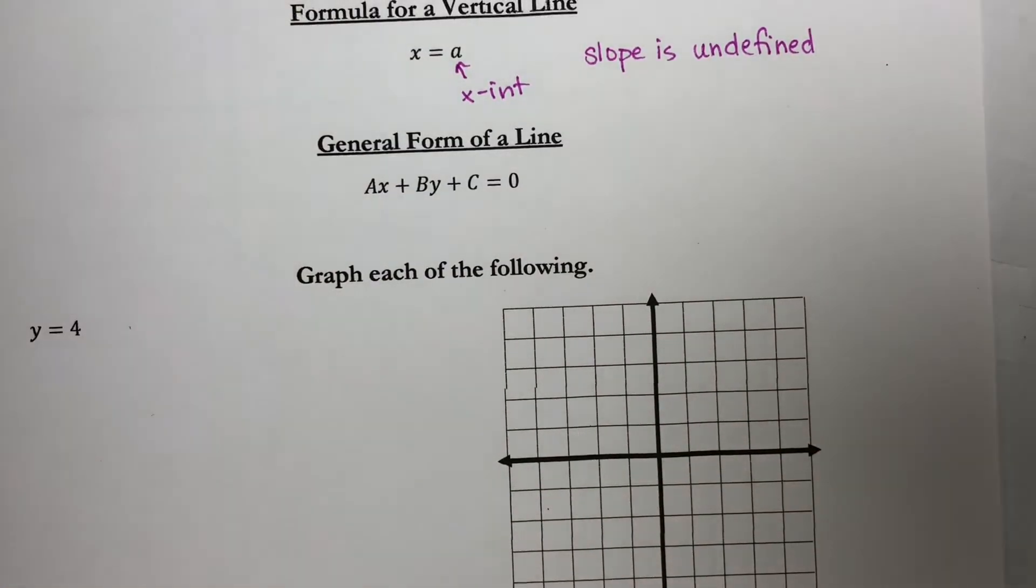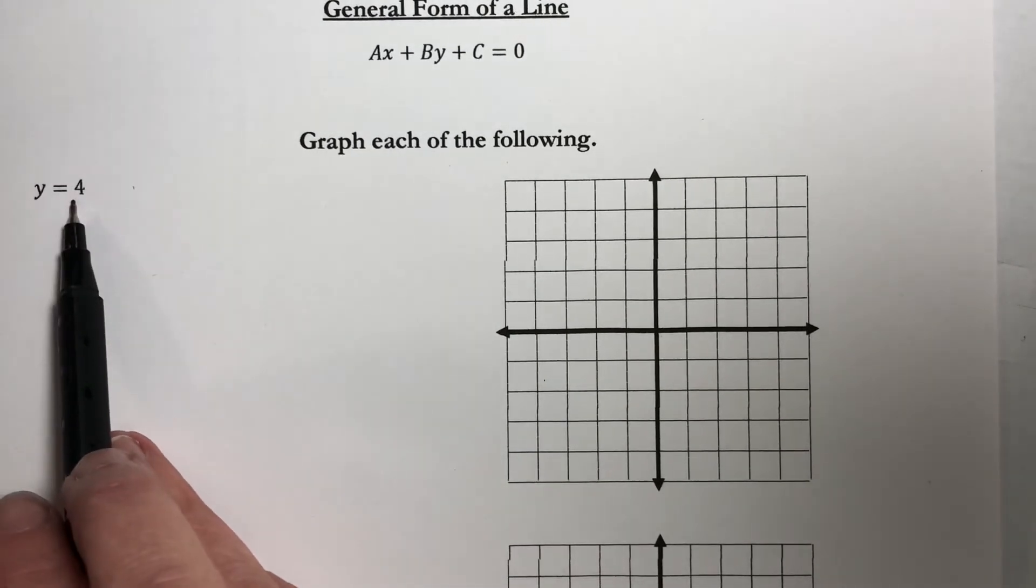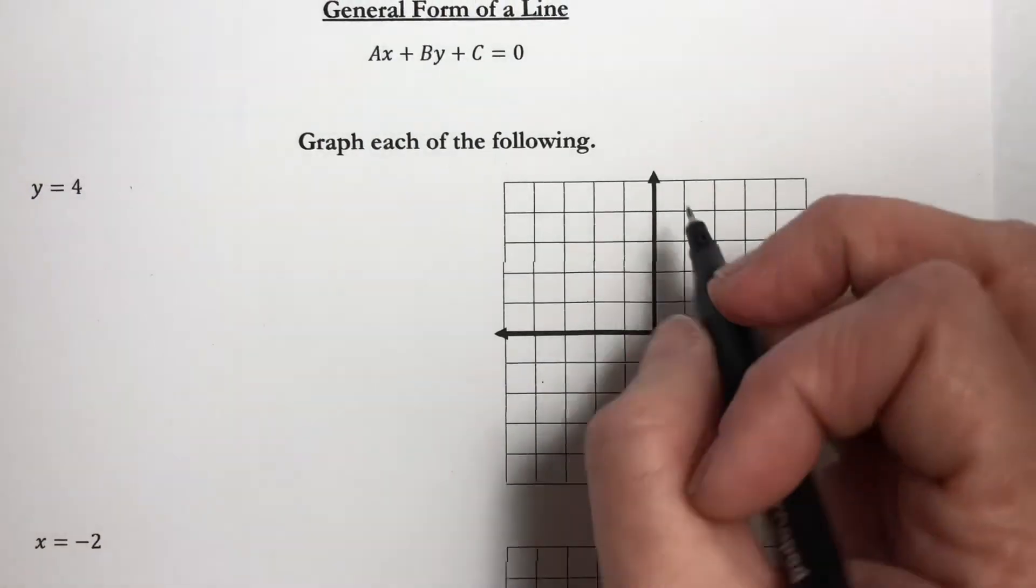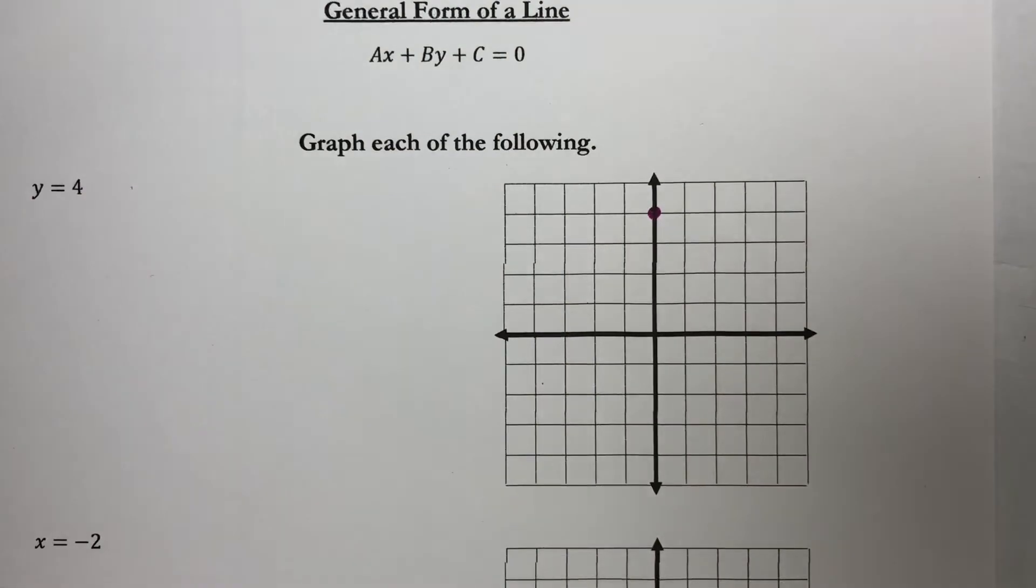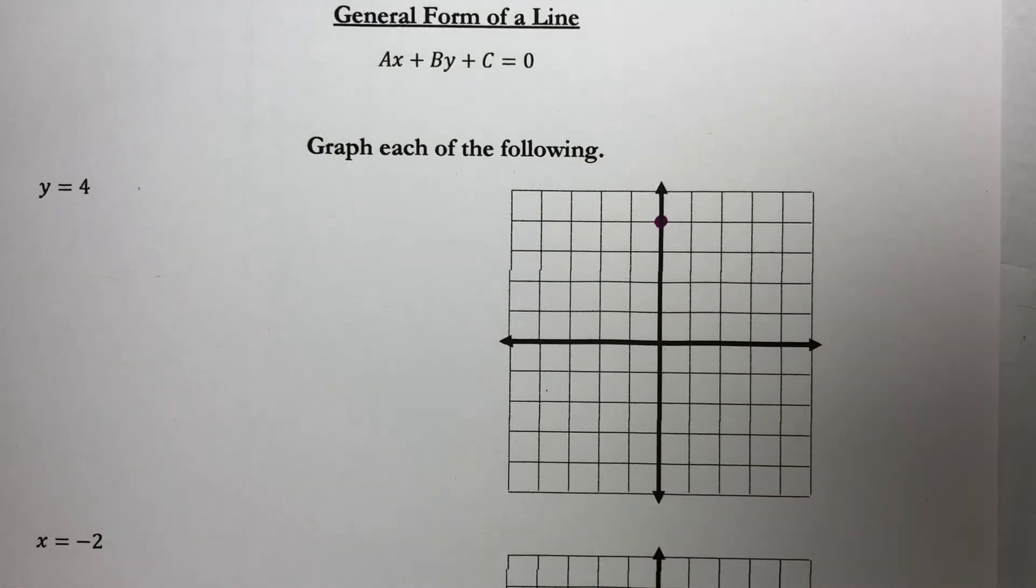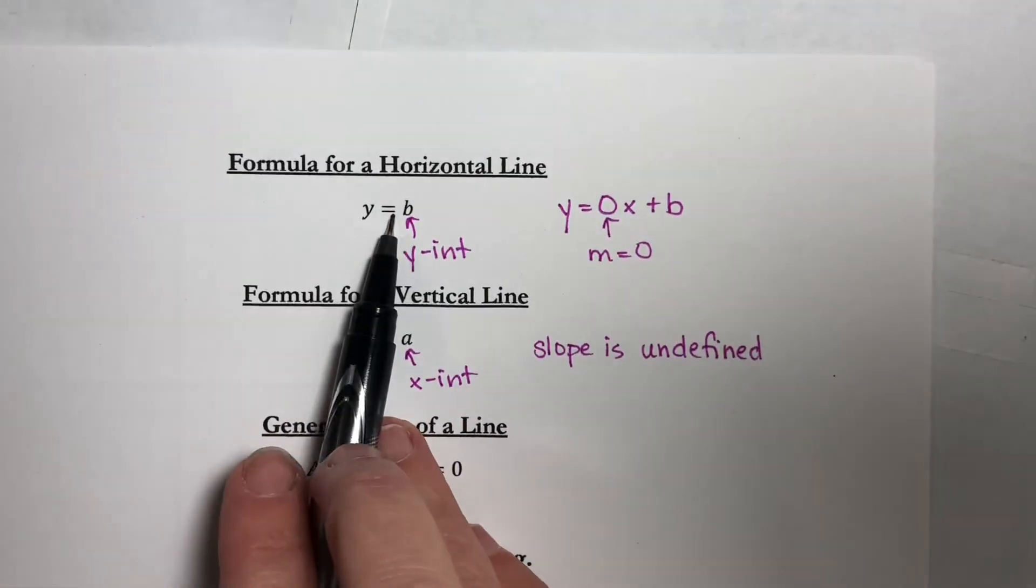So let's use this a little bit. We want to graph y equal to 4. This says my y-intercept is 4, which is right up there, and y equals is a horizontal line.